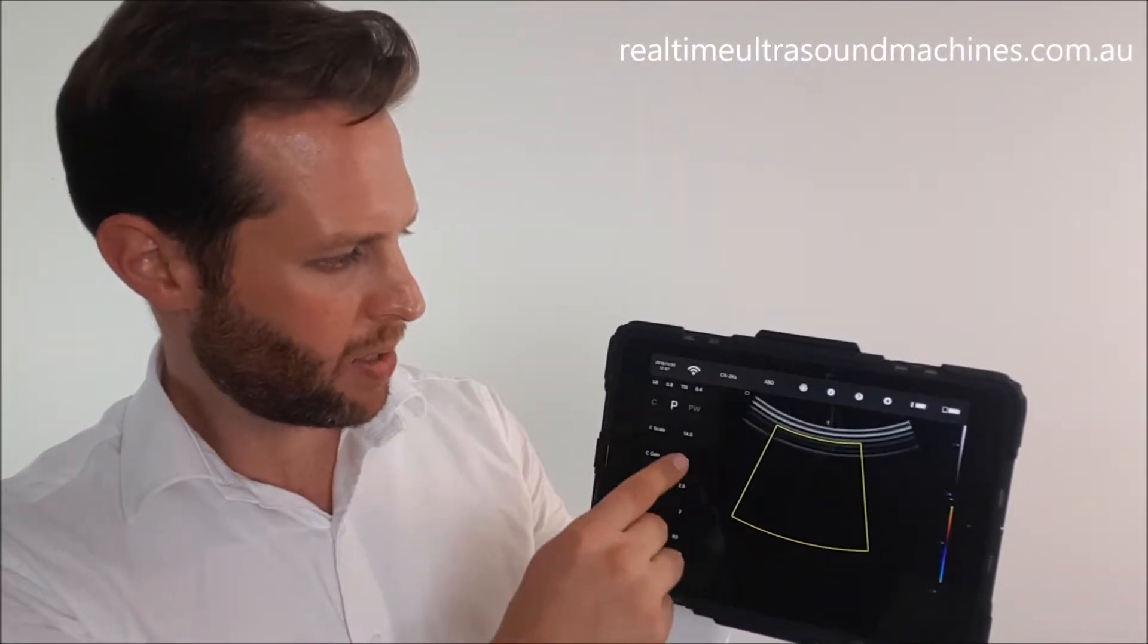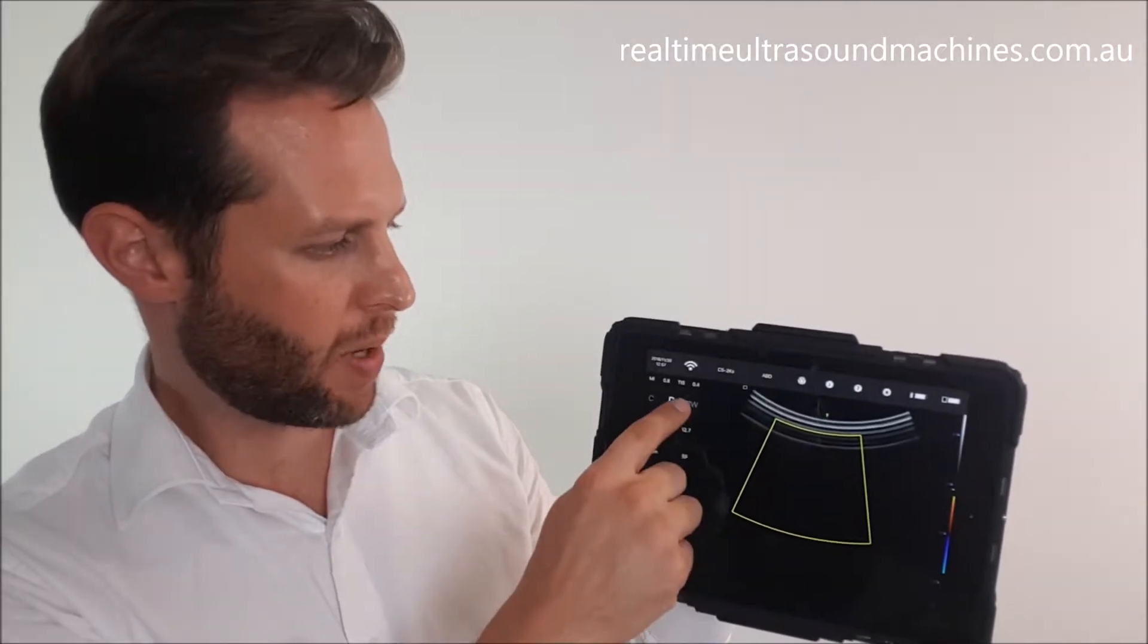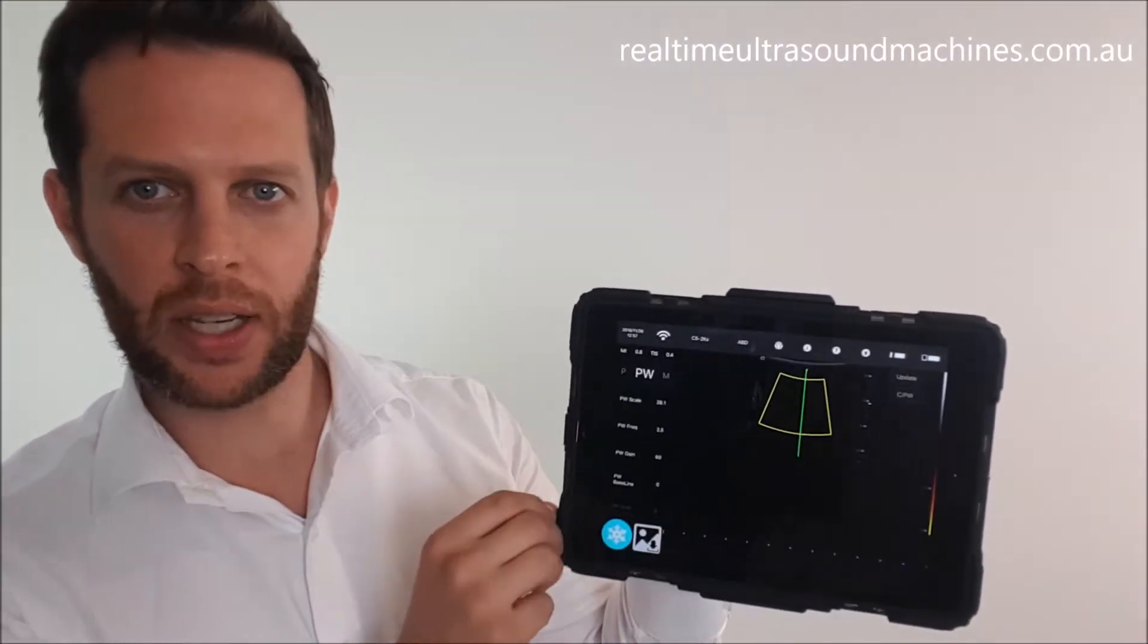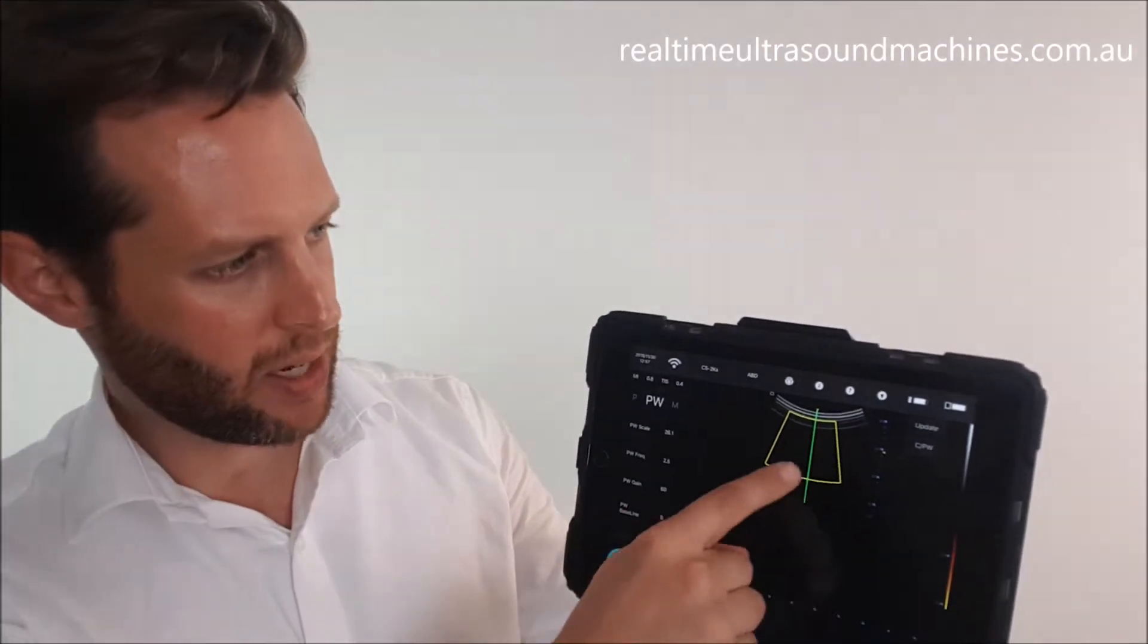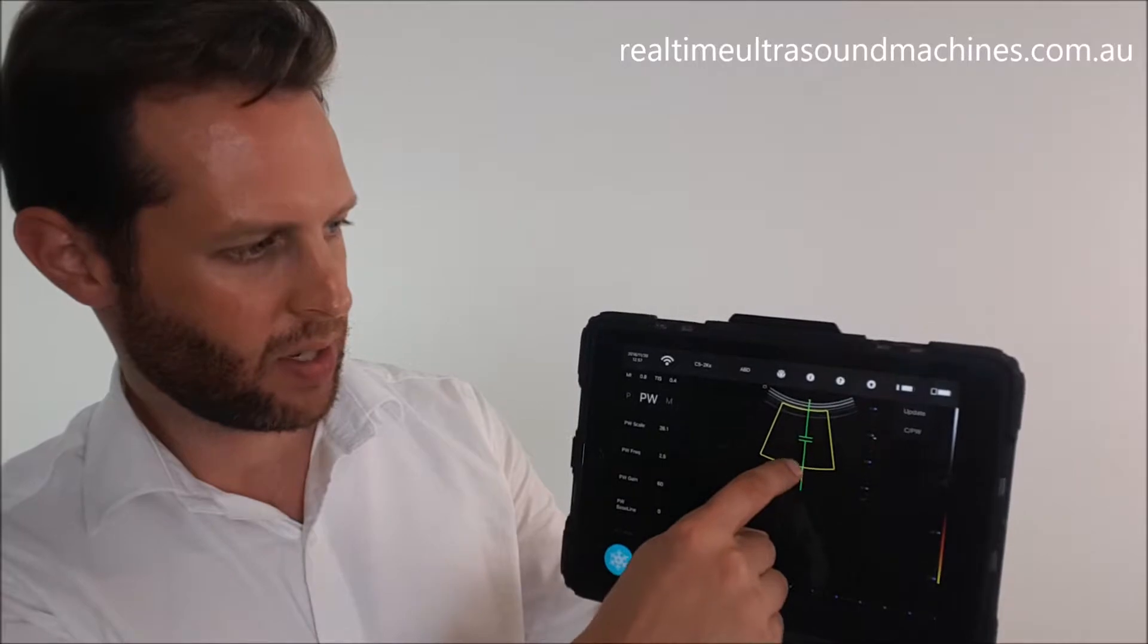For Pulse Wave Doppler, if you slide across, you'll get a little green sampling line here, and you can adjust that using your finger again.